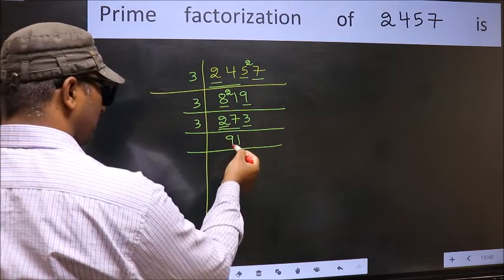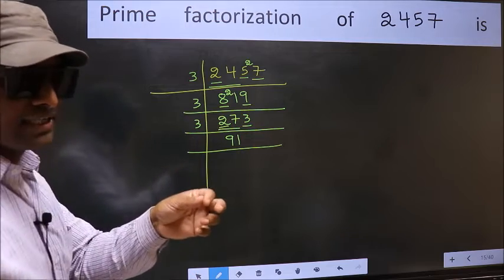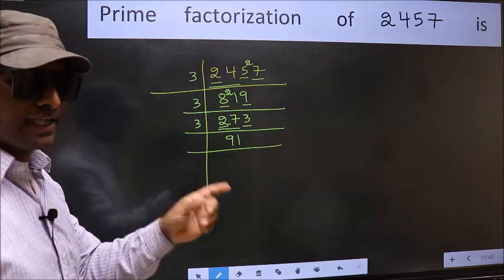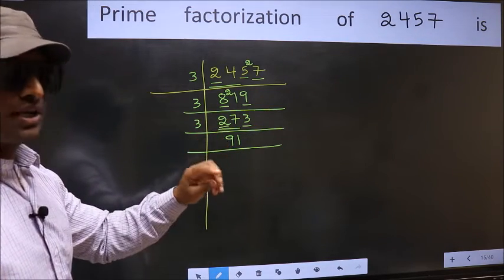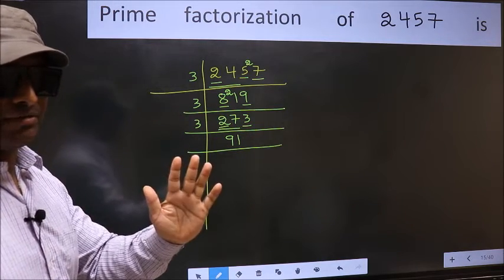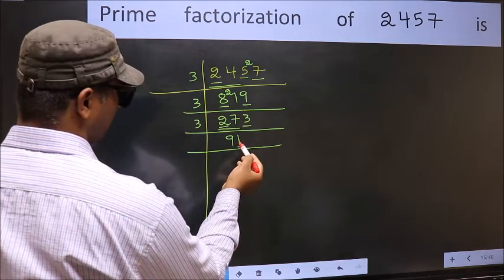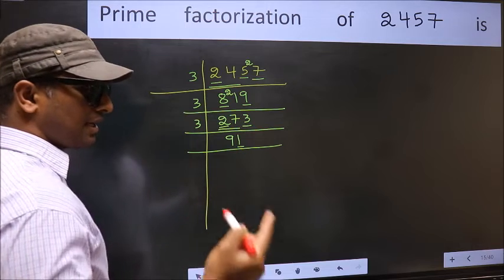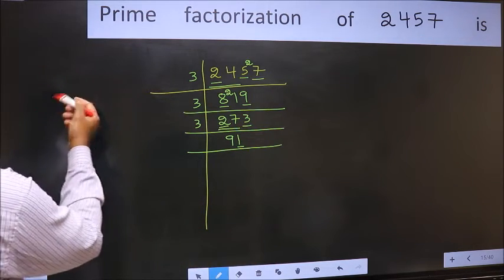Now to check whether 91 is divisible by 3 or not, we add the digits: 9 plus 1 is 10, and 10 is not divisible by 3, so this number is not divisible by 3. Next prime number is 5. The last digit is neither 0 nor 5, so this is not divisible by 5. Next prime number is 7.